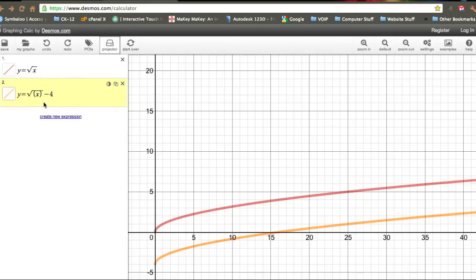So what we're after here is to recognize that changing the value underneath the root makes a left or right change in the location of our graph. And changing the value outside of the root makes a vertical or an up-down change to our graph.